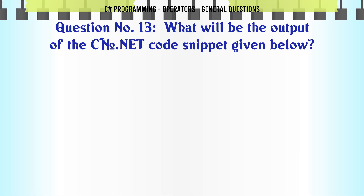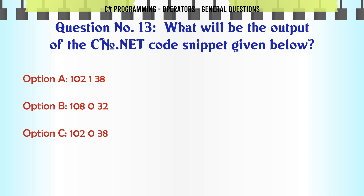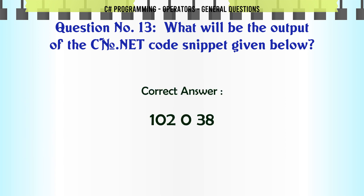What will be the output of the C.NET code snippet given below? A: 100, N=2, 1, 38. B: 100, N=8, 0, 32. C: 100, N=2, 0, 38. D: 1, 0, 1. The correct answer is A: 100, N=2, 0, 38.